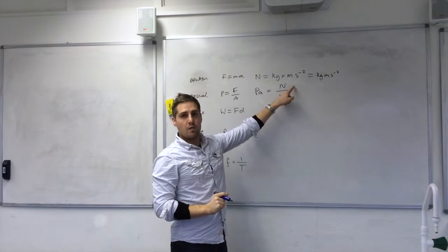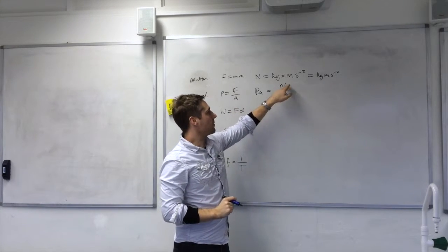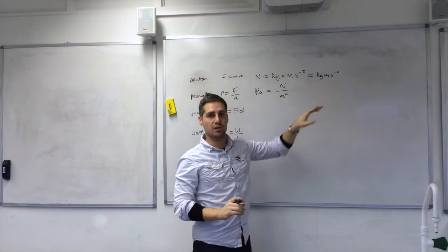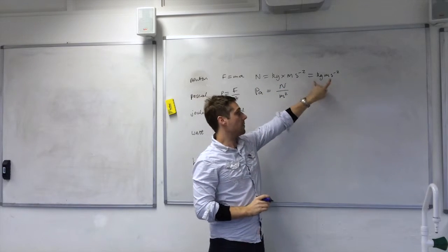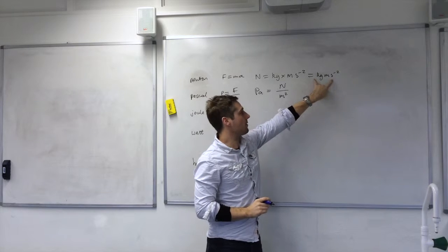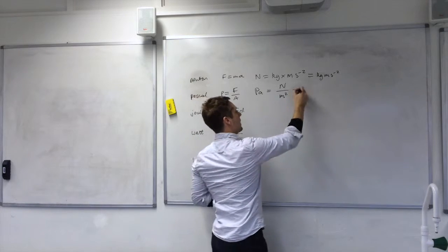Now we've just found out that we can substitute for the Newton with the base units, or the base unit equivalent. So we've got kilogram metres per second squared there.